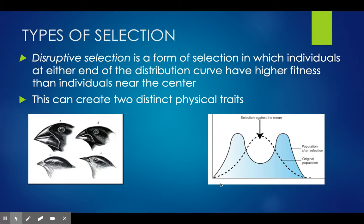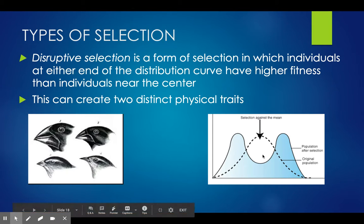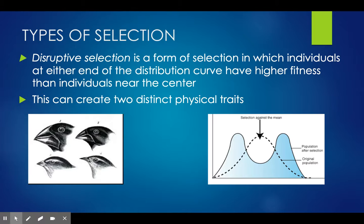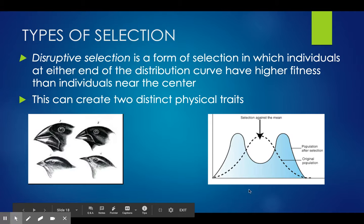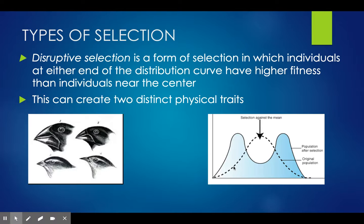The final type is disruptive selection — a form of selection in which individuals at either end of the distribution curve have a higher fitness than those that fall near the middle. This can create two very distinct physical traits. One of the biggest examples of this is finches: depending on the type of seeds that are around, the bigger beaks might be better or the smaller beaks might be better, but the middle-sized beaks don't do well with either of those different seed sizes. So two different traits are better than the middle trait.